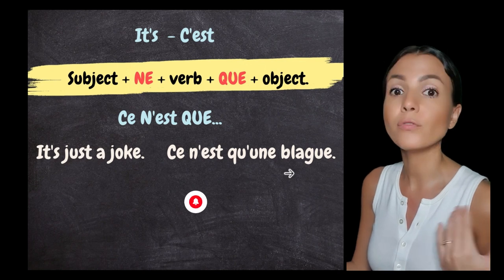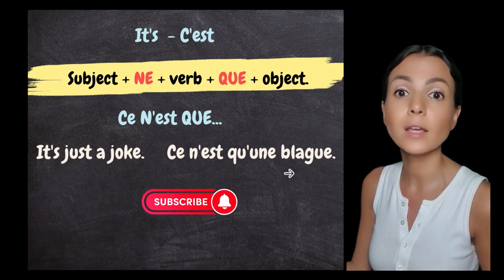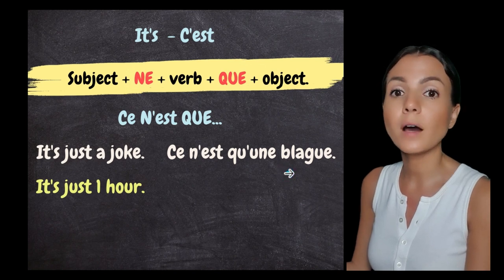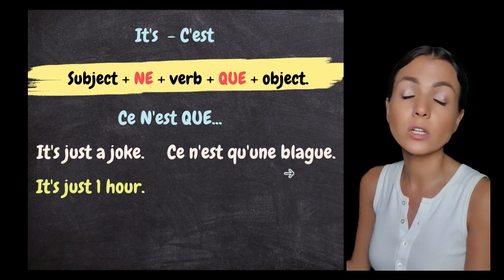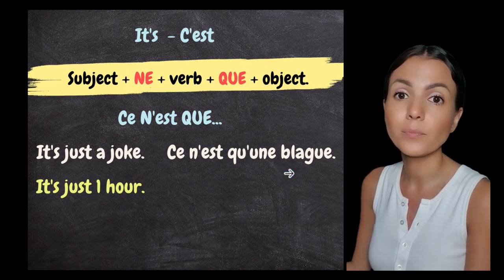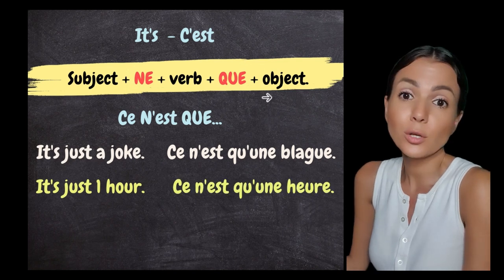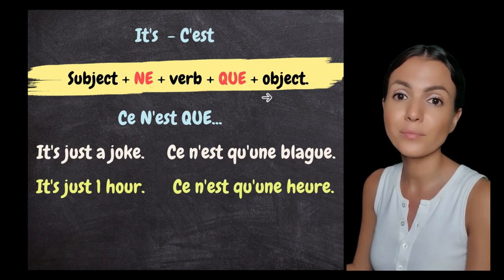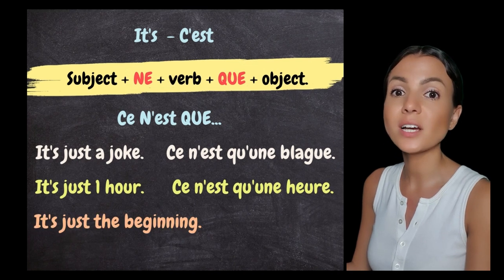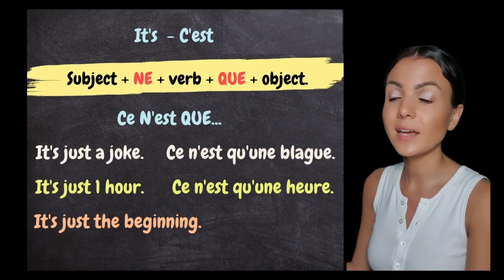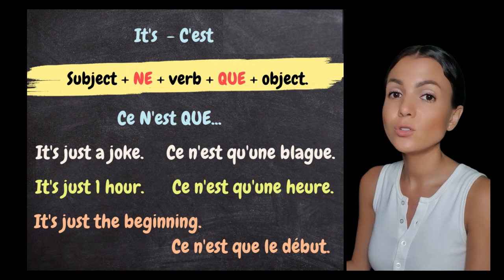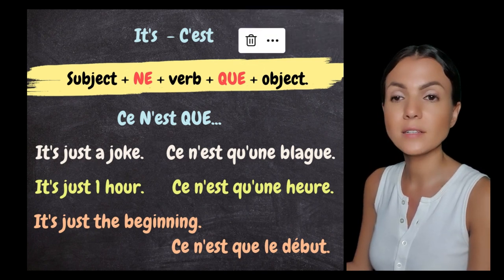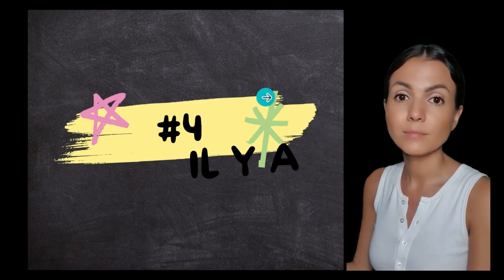In writing, the full version is 'ce n'est qu'une blague'. More examples: 'it's just one hour' → 'ce n'est qu'une heure'. 'It's just the beginning' → 'ce n'est que le début', or in spoken form 'c'est que le début'.